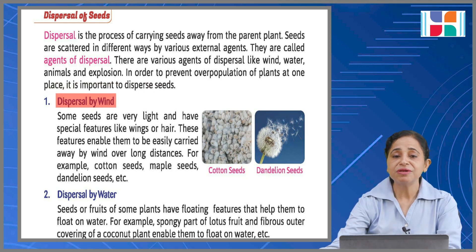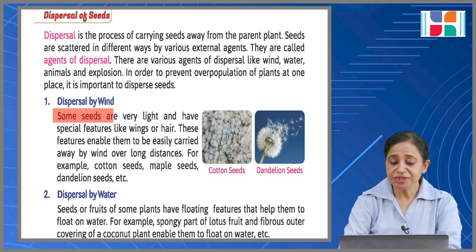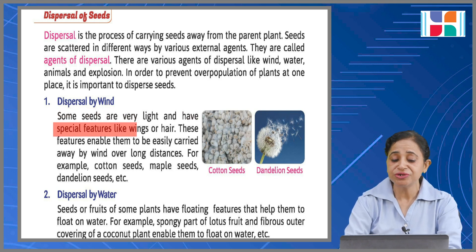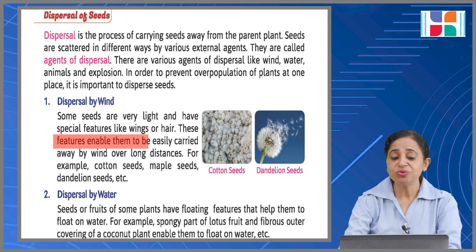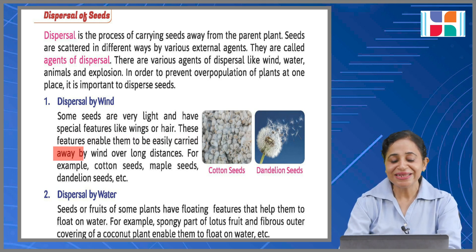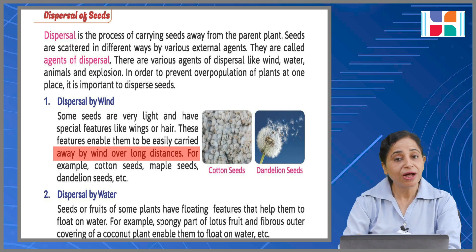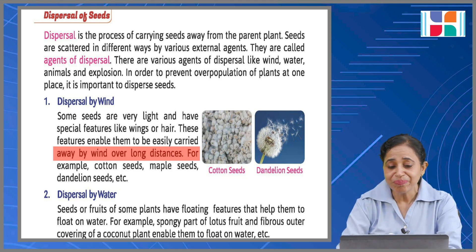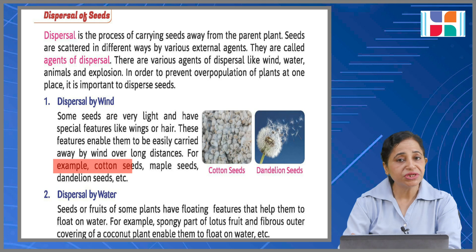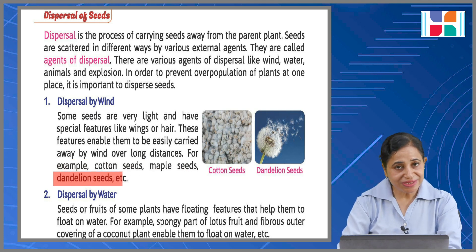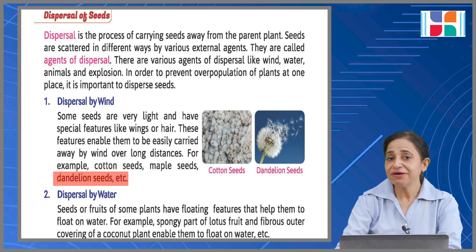Dispersal by wind: some seeds are very light and have special features like wings or hair. These features enable them to be easily carried away by wind over long distances. For example, cotton seeds, maple seeds, and dandelion seeds. So that's one type of dispersal — by wind.